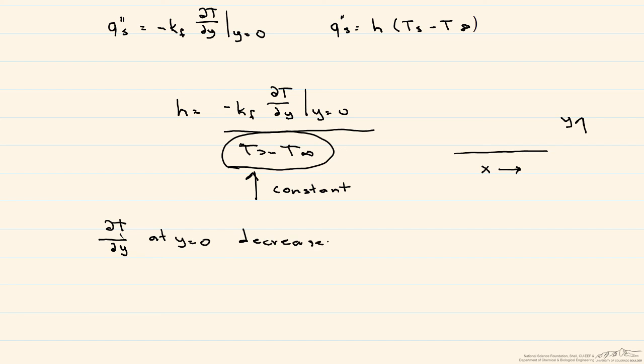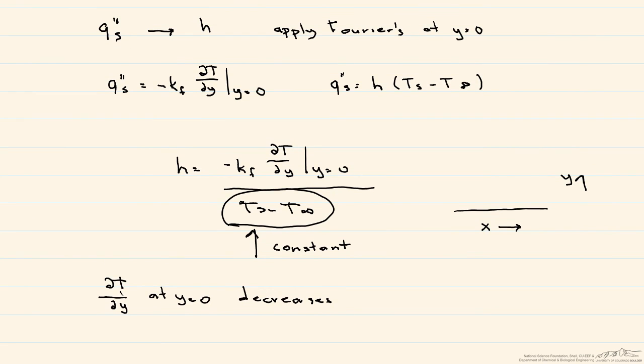If dT/dy decreases, yet our Ts minus T infinity stays constant, what you'll see is not only does h decrease as we go down the plate, the surface flux decreases as well.